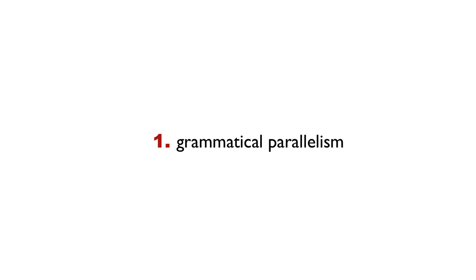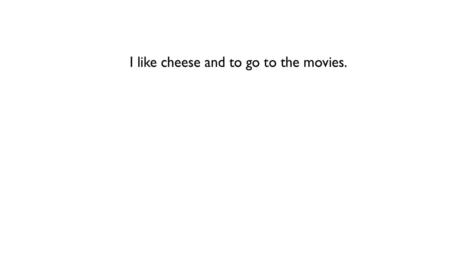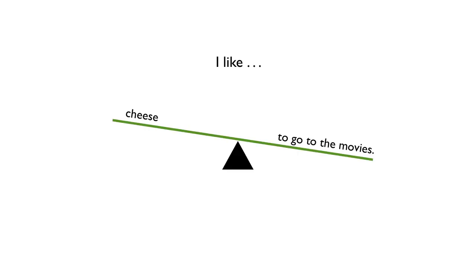Getting into the practice of making your sentences grammatically parallel to create balance is fairly easy. Let's take a look at a sentence: 'I like cheese and to go to the movies.' You probably already know that this is not balanced. There is a coordinating conjunction — 'and' — and the parts on the left and right of the coordinating conjunction are not grammatically parallel.